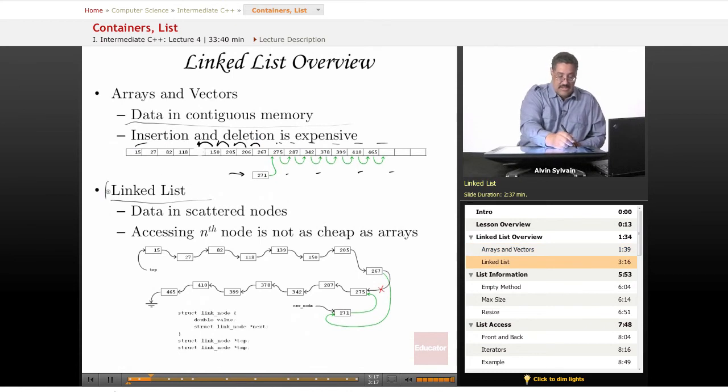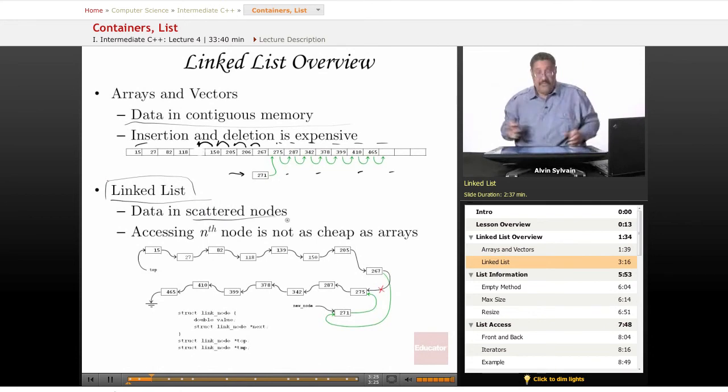Now, your linked list container solves that problem because the data is stored in nodes scattered throughout memory. Here we have the 15 there, the 27 there, the 82, and so on all the way around.